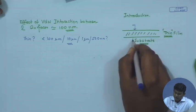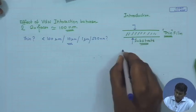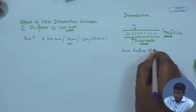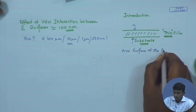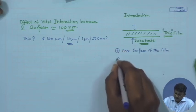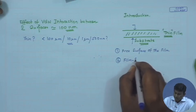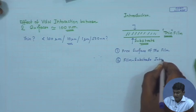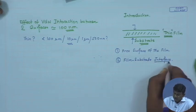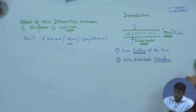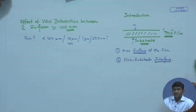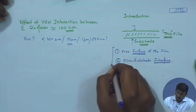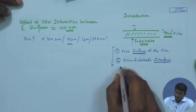A thin film has two boundaries: one is the free surface of the film, and the second is the film–substrate interface. The way I have defined the two boundaries clarifies a pretty important and interesting concept that is going to come up.